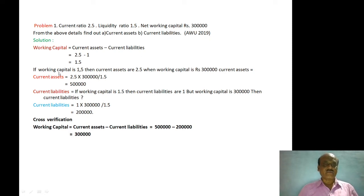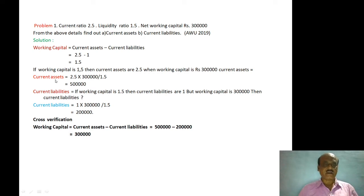If Working Capital is 1.5, then Current Assets is 2.5. Working Capital is 1.5 and Current Assets is 2.5. If Working Capital is 3 lakh, then for 1.5 is to 2.5, but for 3 lakh — Current Assets equals 2.5 into 3 lakh divided by 1.5. This gives us the Current Assets value.